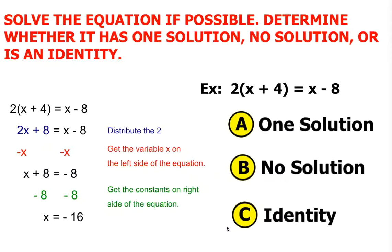So out of these three choices, one solution, no solution, or identity, which one would you select? I hope you chose choice A, one solution.